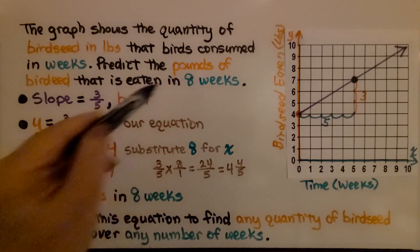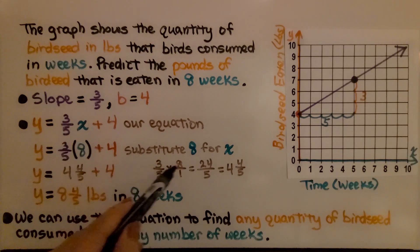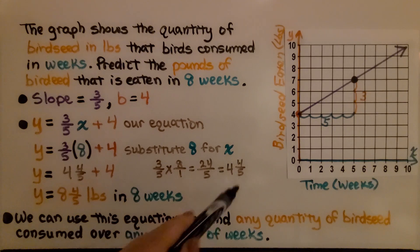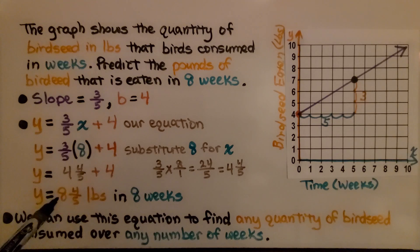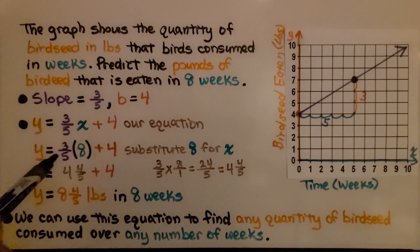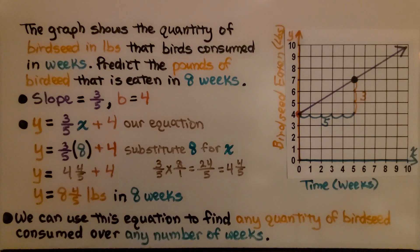We just substitute 8 for the weeks. For x, we do 3/5 times 8 and we get 4 and 4/5. Now we add the 4 for the y-intercept b to that and we get 8 and 4/5. That means y is equal to 8 and 4/5. So we know 8 and 4/5 pounds will be eaten in eight weeks. And we can use this equation to find any quantity of bird seed consumed over any number of weeks. We can even find over 150 weeks how much bird seed will be eaten. Any number.